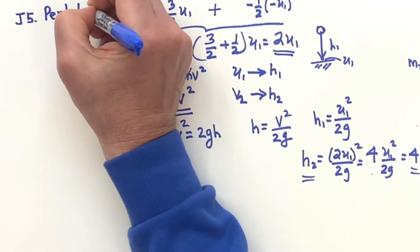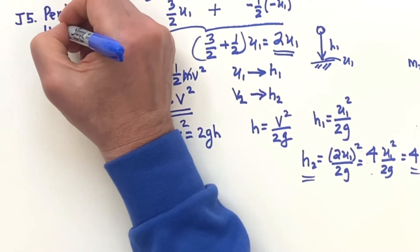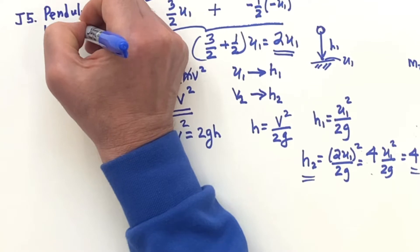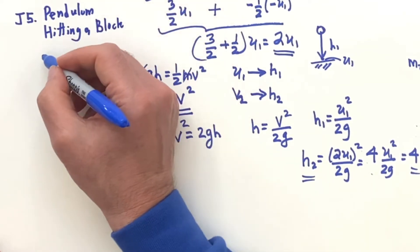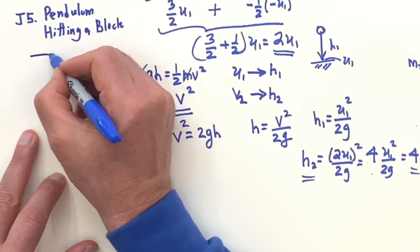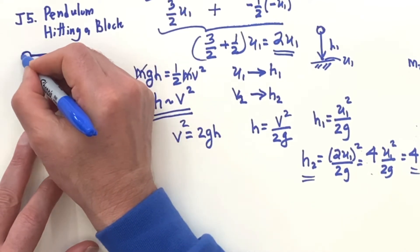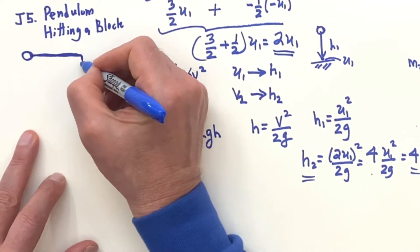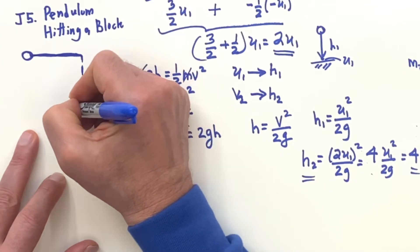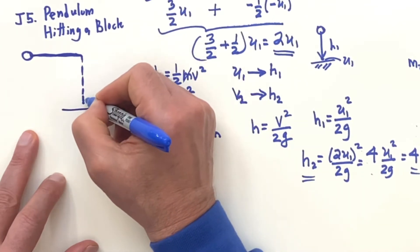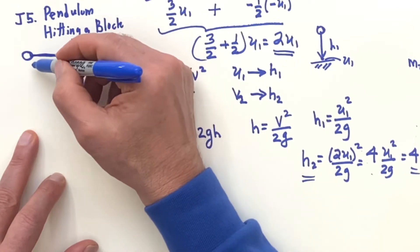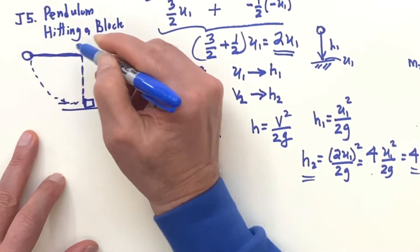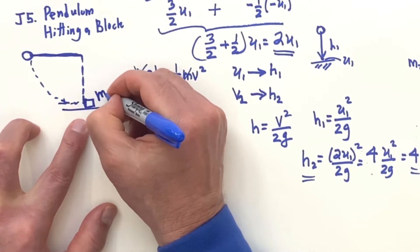J5, the pendulum hitting a block. So in this case, we have a pendulum. We're going to bring it up to 90 degrees. And then down here on the ground, there's a mass. And this is going to swing down and smack into mass two.